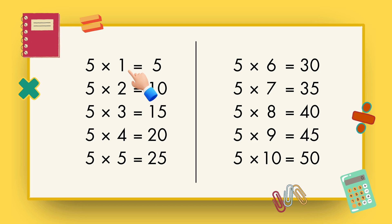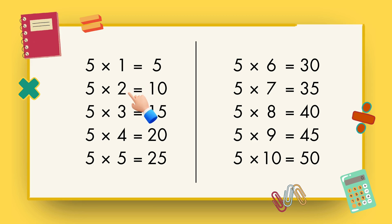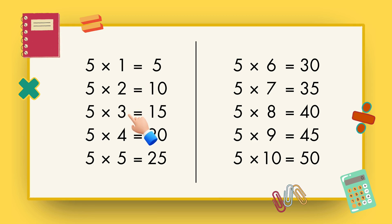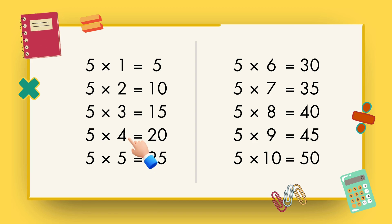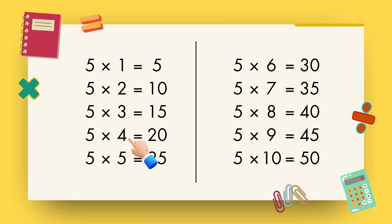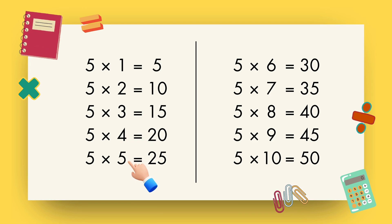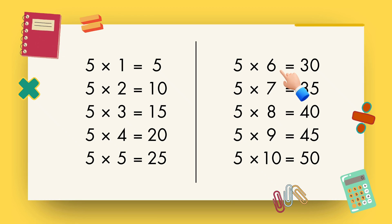5 1s are 5, 5 2s are 10, 5 3s are 15, 5 4s are 20, 5 5s are 25, 5 6s are 30.